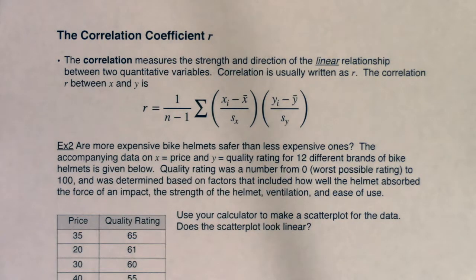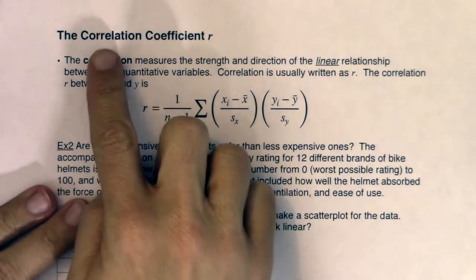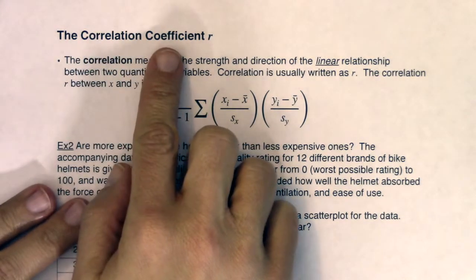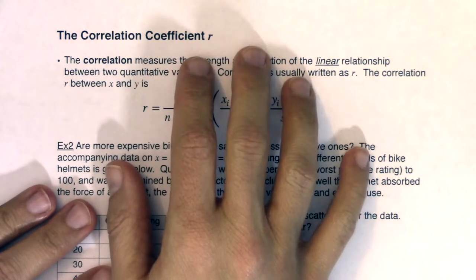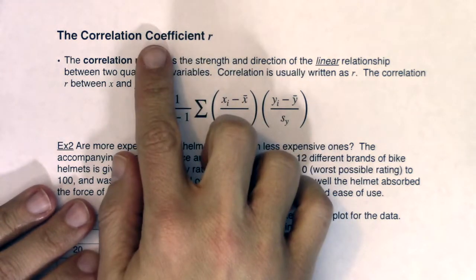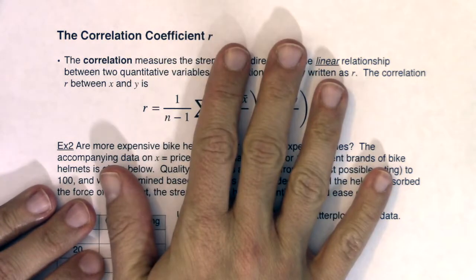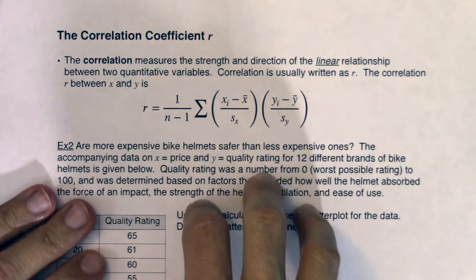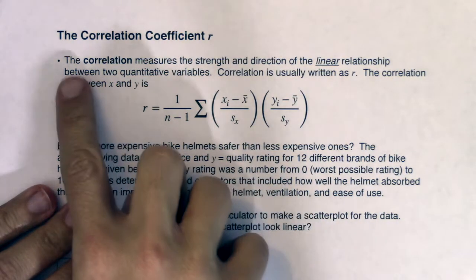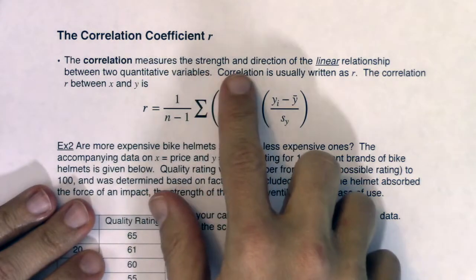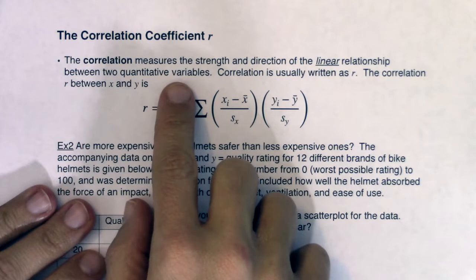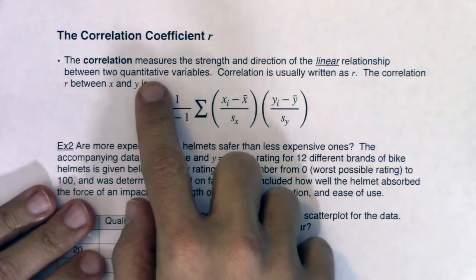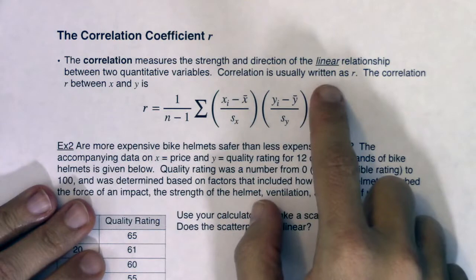Let's start to figure out how to calculate the correlation coefficient. When you hear me refer to this phrase, correlation coefficient, we have a letter for it — it's called R. R is the correlation coefficient. The correlation measures the strength and direction of the linear relationship between two quantitative variables, two numerical variables. Correlation is usually written as R.